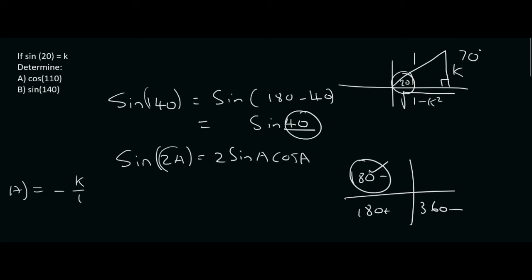So, if we take 40, and we rewrite it as 2 times 20, then that's the same as 2 sin 20 times cos 20. See how the 20 goes there and there, just like the A goes there and there.